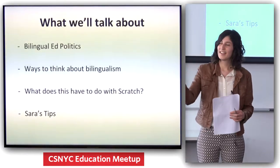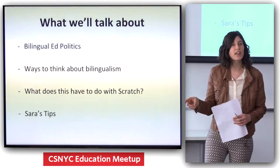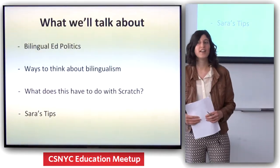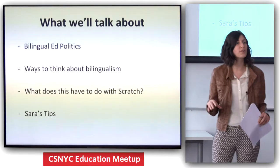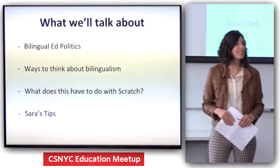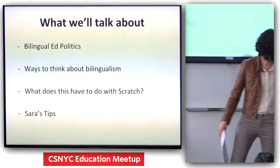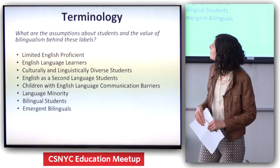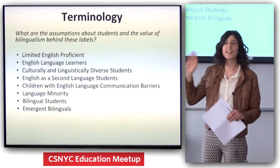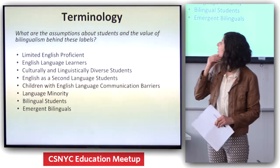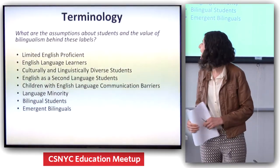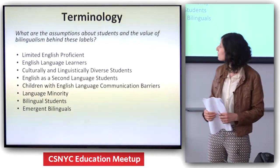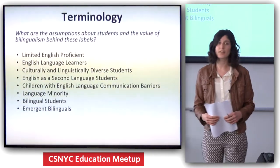ELL — English Language Learner — is the one we hear most often in schools. But there are a lot of these terms. LEP, Limited English Proficient. Culturally and linguistically diverse students. English as a second language students. English with English language communication barriers. Language minority. Bilingual students. Emergent bilingual.